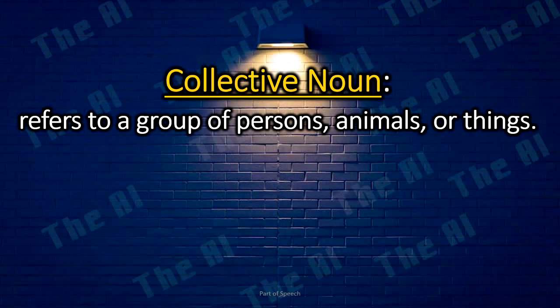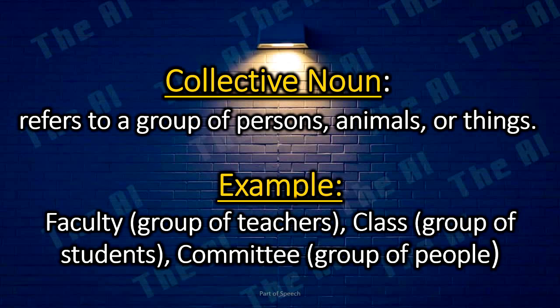Collective nouns refer to a group of persons, animals, or things. Examples: faculty (group of teachers), class (group of students), committee (group of people).